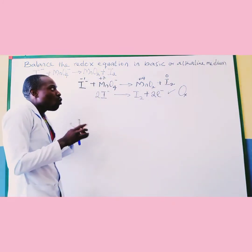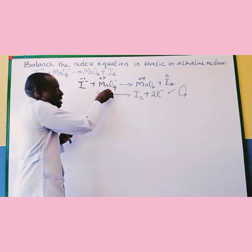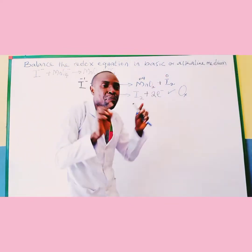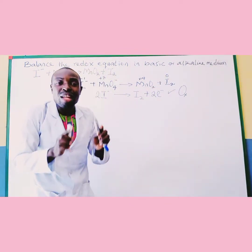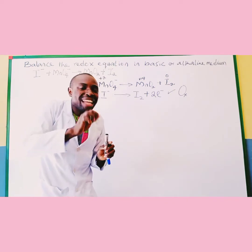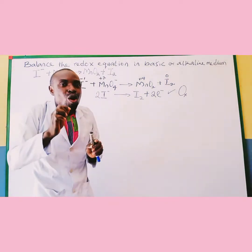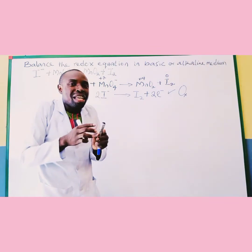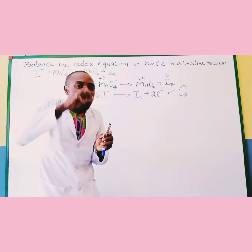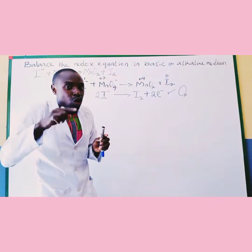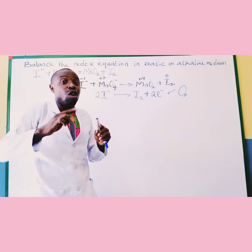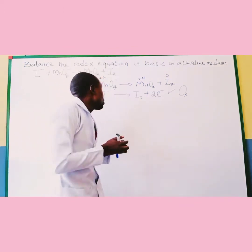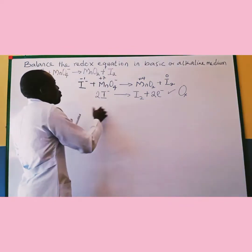Then we move to the reduction half, which is the major aspect. Remember, it is a basic or alkaline medium, so that tells you that hydroxide ions will be added. This also occurs at the final step, although not in all cases — but in most cases that is how it is done. Follow my steps.